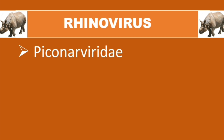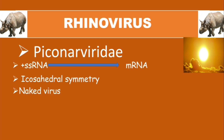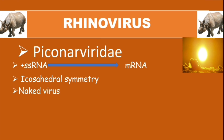The rhinovirus is a positive-sense single-stranded RNA virus, which means its structure is similar to messenger RNA. In this series we are representing positive-sense single-stranded RNA viruses using the sun symbol. The rhinoviruses have an icosahedral symmetry and they are naked.